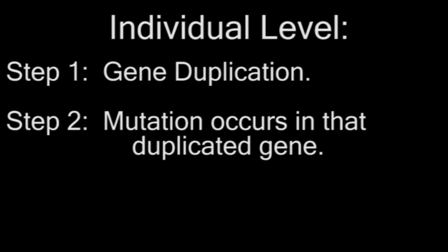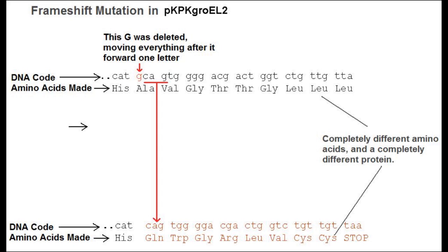There are many types of mutations that can occur, but a common and useful type is called a frameshift mutation. Every three bases, or letters in DNA — such as A, T, G, C — codes for an amino acid. When you connect those amino acids, you get proteins. So it goes: DNA, amino acids, proteins.